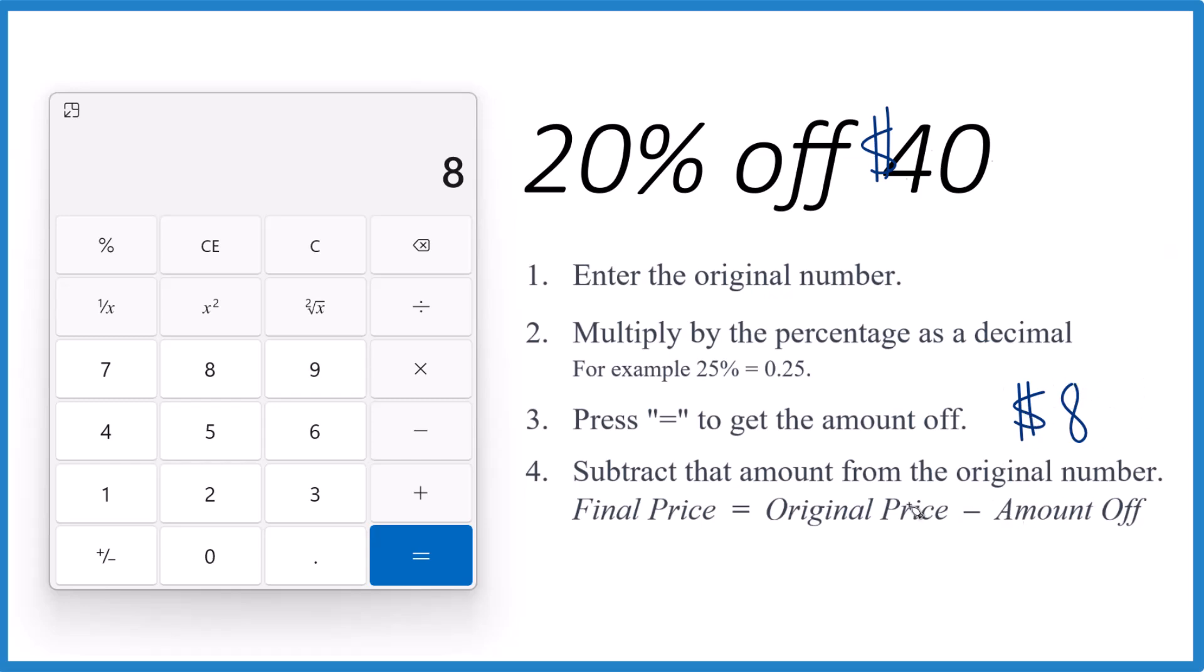If you want to know the final price, you take the original. That's what you had there, the 40, minus how much you save, and the final price, 40 minus 8, that's $32.